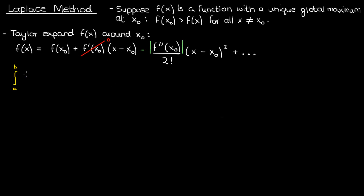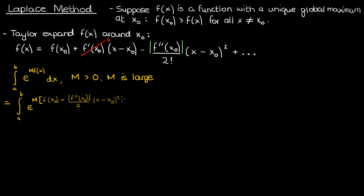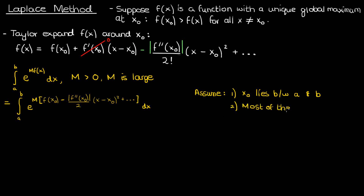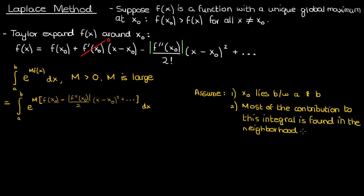Now we'll compute the integral from a to b of the exponential of capital M times f of x, where capital M is some large positive number. We'll substitute in the Taylor expansion of our function f of x, and at this point I'm going to make two assumptions. The first is that the global maximum x0 lies between the limits of integration a and b, and that it's not an endpoint of the integration. The second assumption is that most of the contribution to this integral is found in the neighborhood of x0.